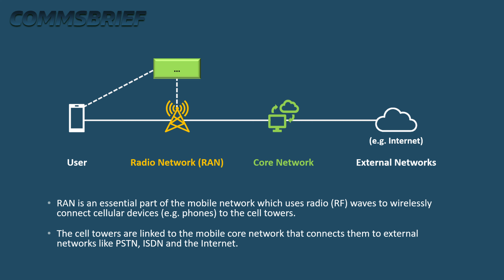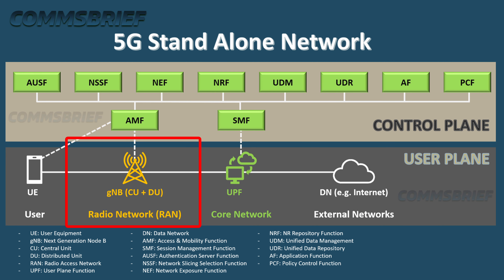If you look at this basic network diagram, you can see where RAN fits in. RAN is an essential part of the mobile network which uses radio or RF waves to wirelessly connect mobile devices to cell towers. The cell towers are linked to the mobile core network, which connects them to outside networks like PSTN, ISDN, and the internet.